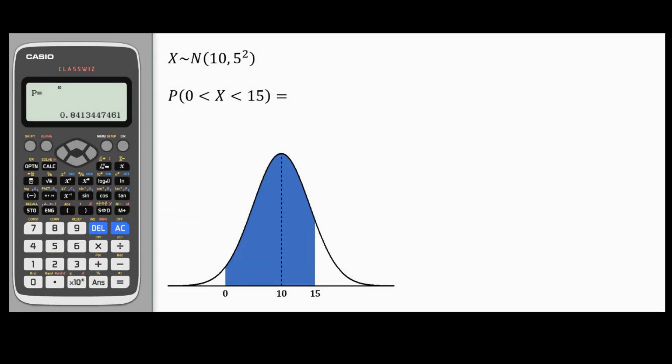Next, consider the probability that X is between 0 and 15, as shown on this sketch. Again, AC, all I have to change is lower and upper. This region starts at 0. It ends at 15. Then, mu and sigma are already there. I'll press the equal sign. And this will give me the probability which is 0.8186 to 4 decimal places.